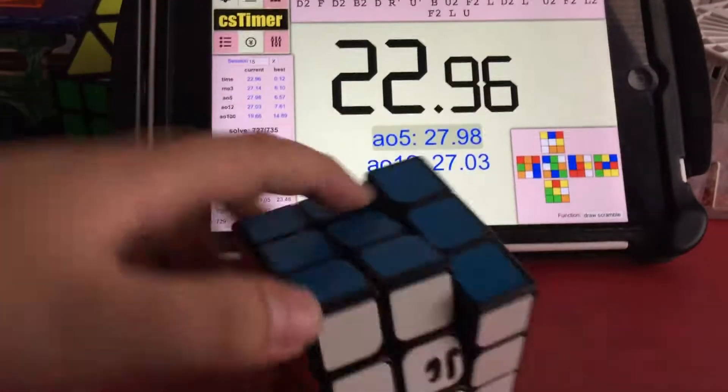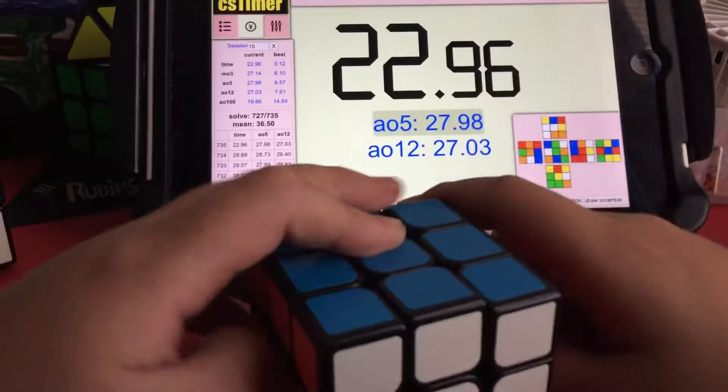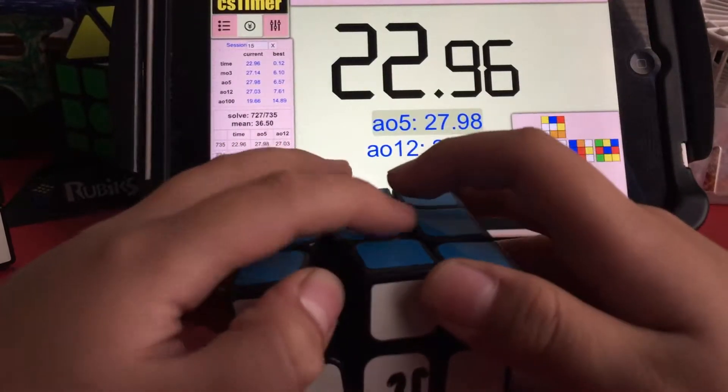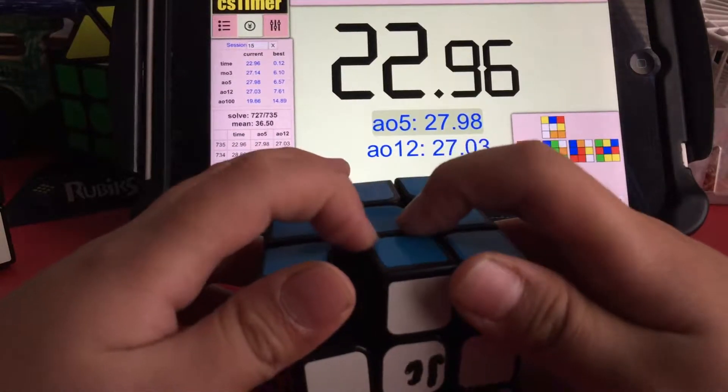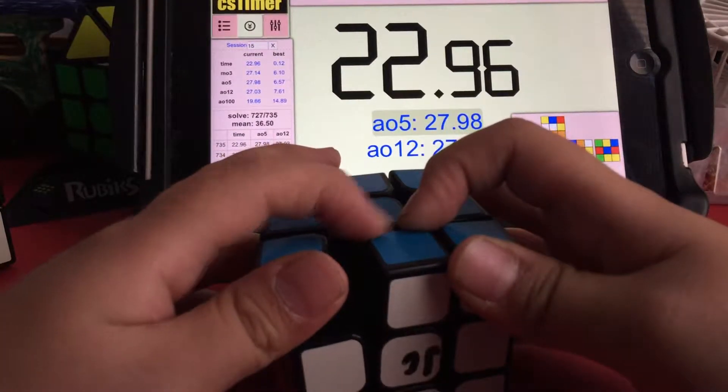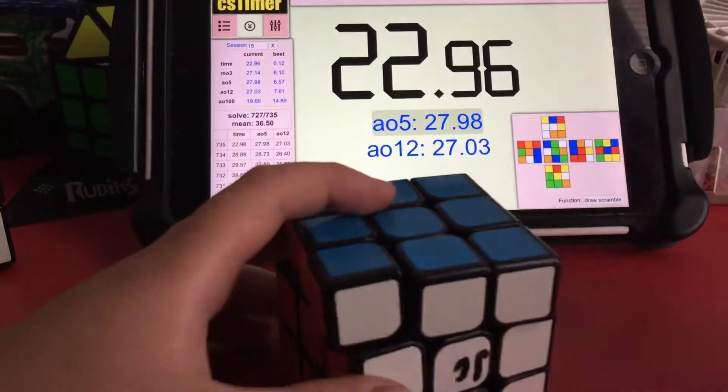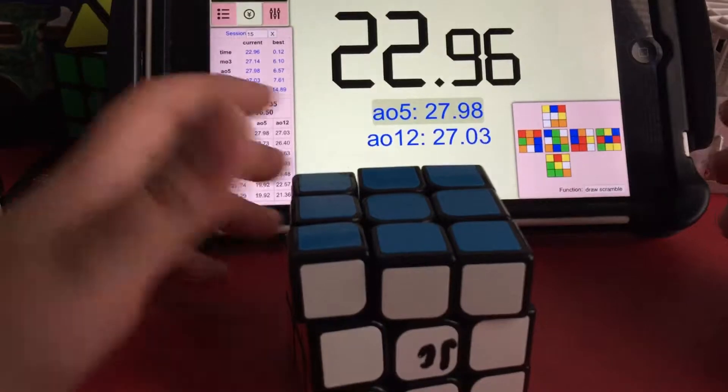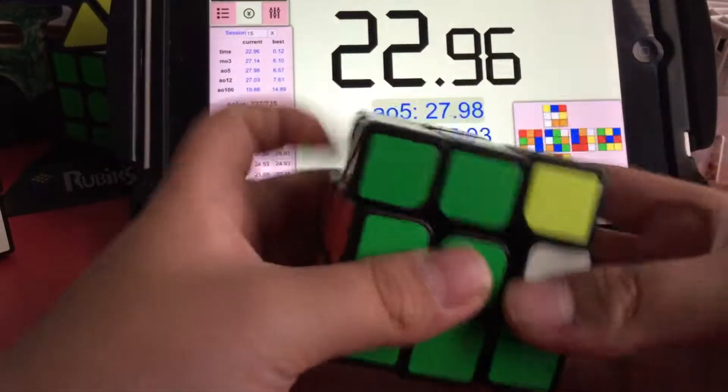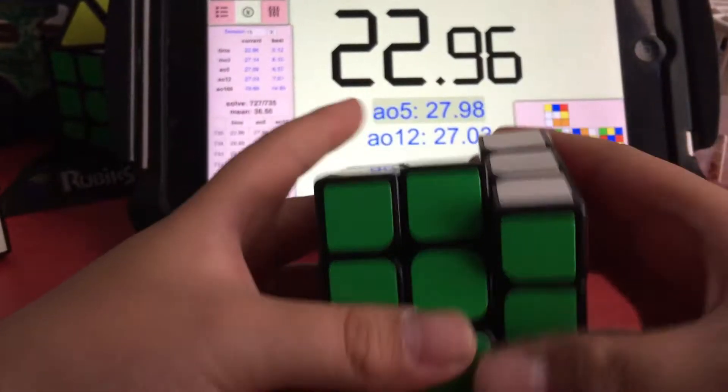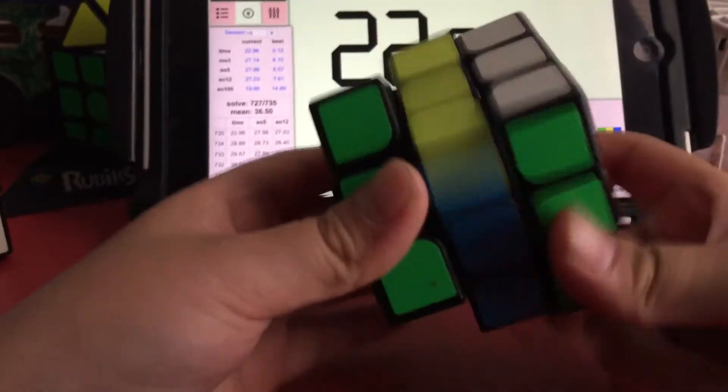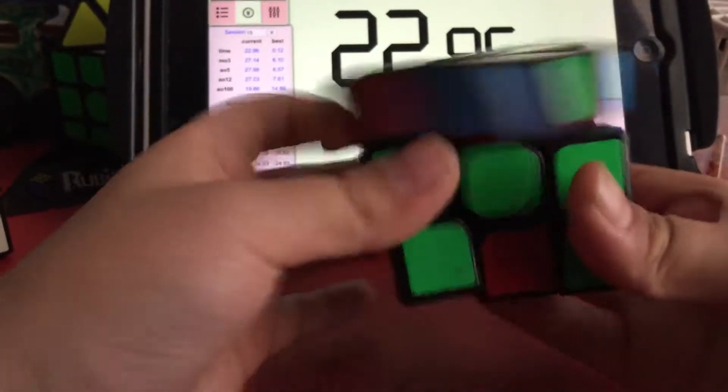Well hey, my average of five is 27.98. Worst solve is the 38.53, best solve is the 22.96. Wow! I am quite meh. The average is quite meh, especially for a cube from 2014.